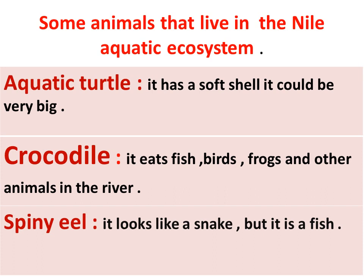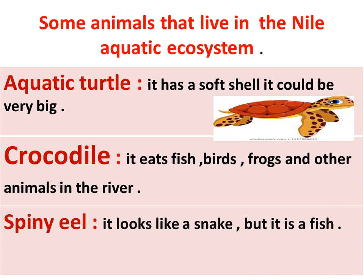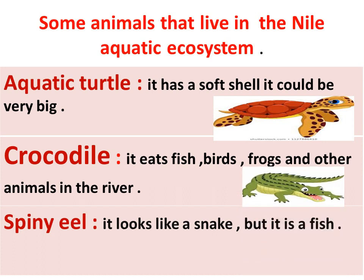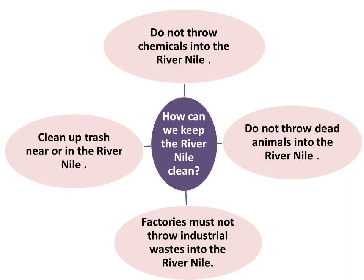The aquatic turtle has a soft shell and it could be very big. The crocodile eats fish, birds, frogs, and other animals in the river. The spiny eel looks like a snake, but it is actually a fish.